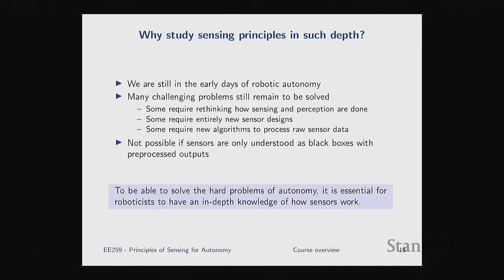Many challenges still remain to be solved. Some require rethinking how sensing and perception are done. Some require entirely new sensor designs that nobody has thought of yet. Some require new algorithms that process sensor data differently to perceive the world in conditions not currently possible. None of this is possible if we only understand sensing at a black box level. To solve the hard problems of autonomy, we need a deep understanding of sensing at almost the physics level.